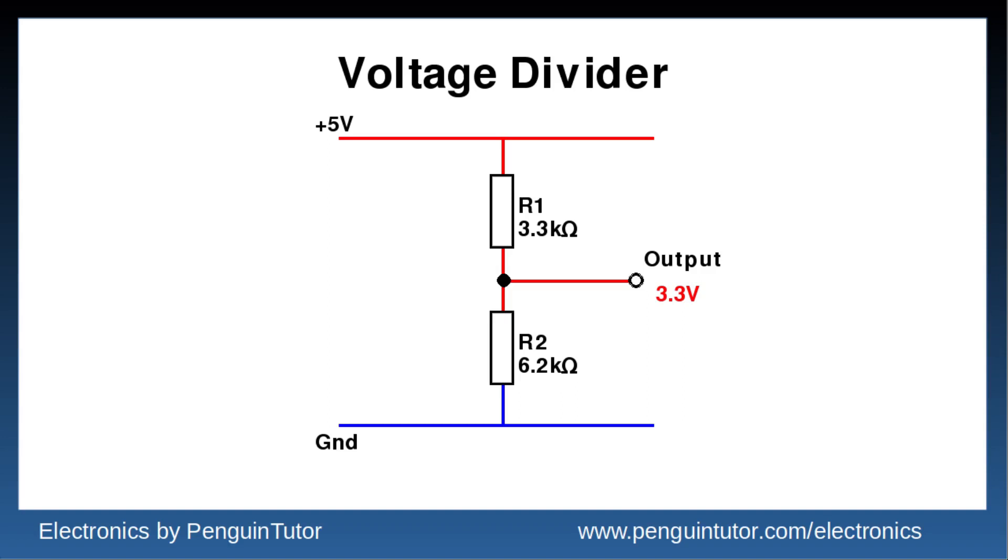It also only works in one direction, and it's not possible to take a 3.3 volt signal and increase it to 5 volt just using resistors. Using resistors in this way is a basic method, but can be sufficient for some uses.